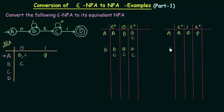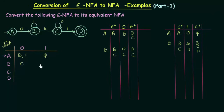Now for state B on input 1: the Epsilon closure of B is B and C. B on input 1 goes to B itself, and C on input 1 goes to D. The Epsilon closure of B is B and C, and the Epsilon closure of D is only D. So B on input 1 will go to states B, C, and D.